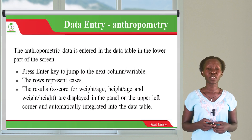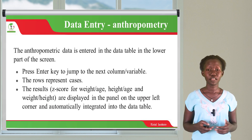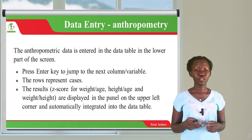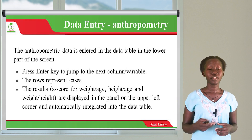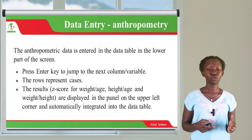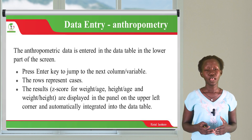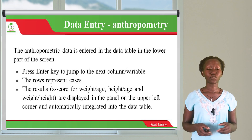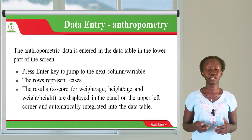We have the sheet for data entry and anthropometry. The anthropometry data is entered in these data entry sheets in the lower part of the screen. To navigate through, you press the Enter key to jump to the next column. The rows represent the cases. The Z-scores for heights and weights are all displayed in the panel on the upper left corner and are automatically integrated into the data table.